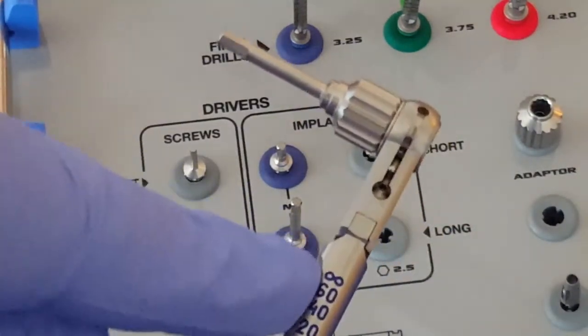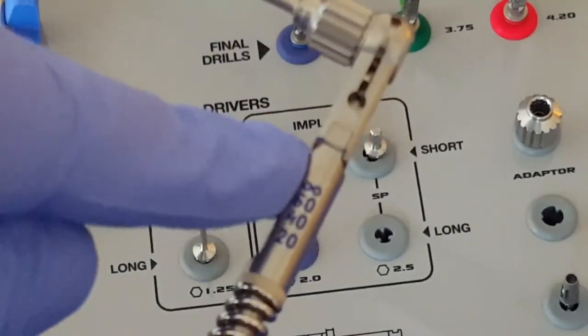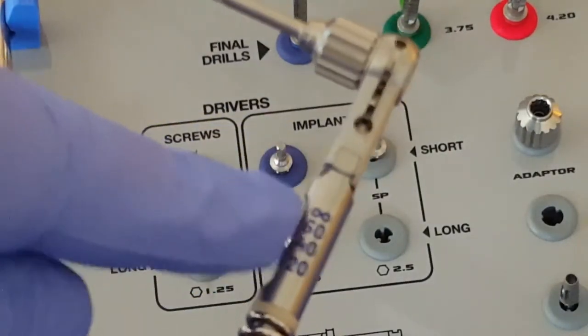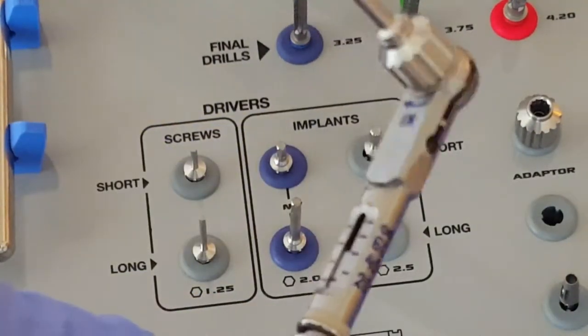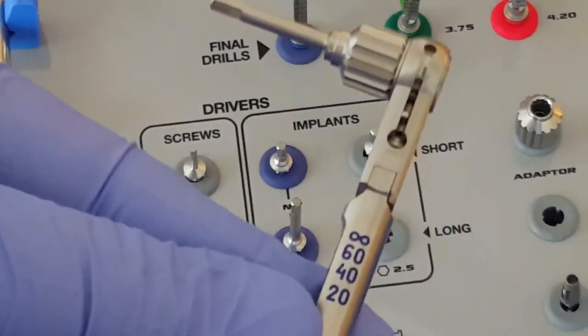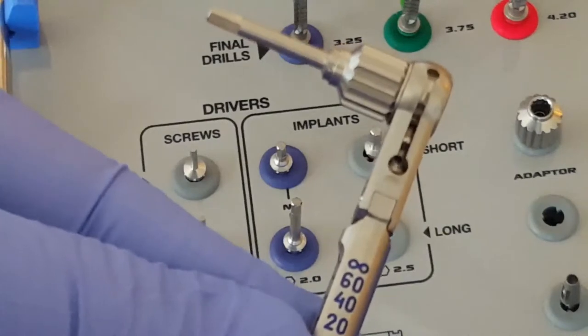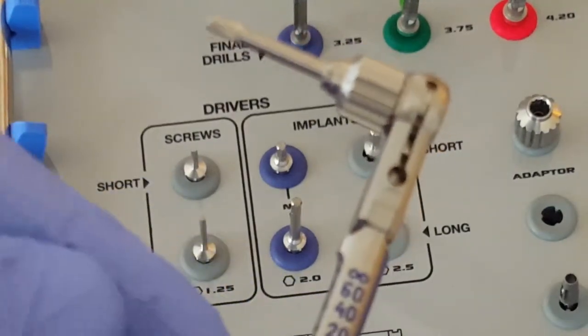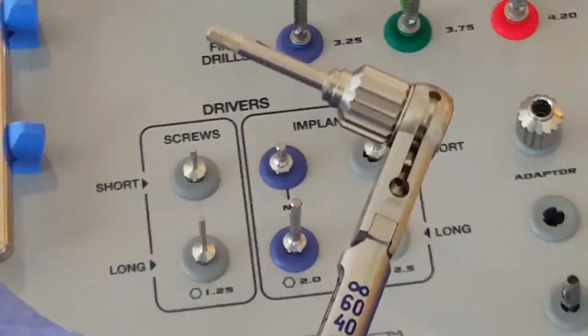Now we can utilize these numbers, 20, 40, 60 Newton centimeter, to go ahead and set the appropriate insertion torque. For the Paltop implants, we generally recommend not to exceed between 30 and 40 Newton centimeter.